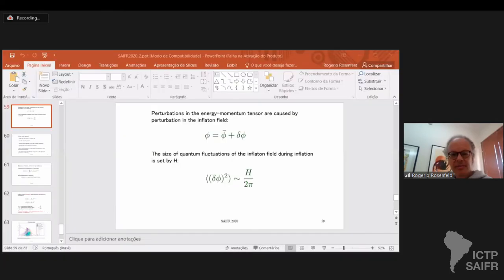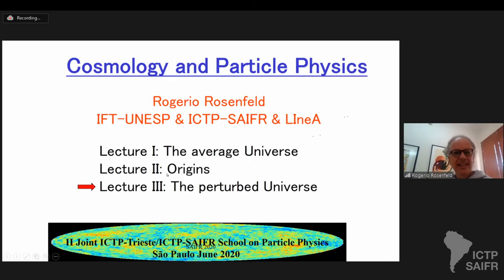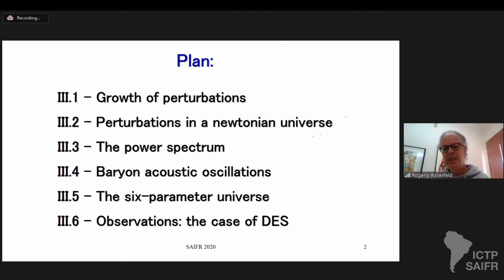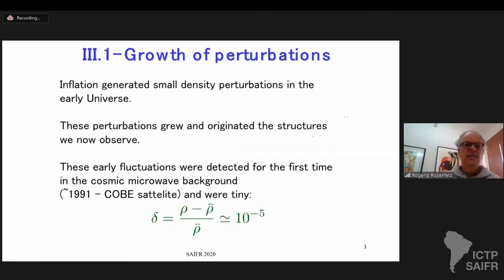Now let's switch gears. I'm going to the third set of lectures, talking about the perturbed universe. The plan is to discuss the growth of perturbations, give a simple example in a Newtonian universe, and talk about the power spectrum. I really want to get closer to the observations, especially concentrating on the experiment I'm working on: the Dark Energy Survey. Inflation can generate small density perturbations in the early universe, and these are the perturbations that grow and originate the structures we now observe.